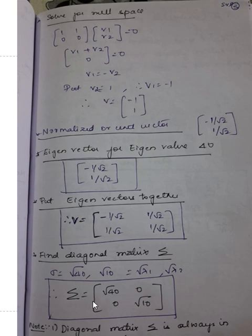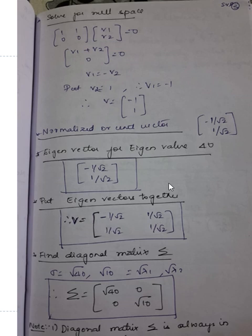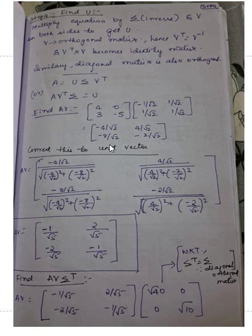Now find U. First compute AV: multiply the original matrix A with V. Then convert AV to a unit vector by dividing each entry by the square root of the sum of squares of that column — not row-wise. This gives the normalized unit vector AV.